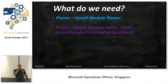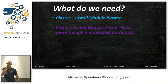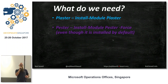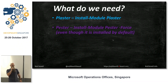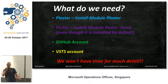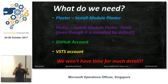What do we need? Plaster — install module Plaster. Pester — install module Pester with a force to get the latest version. We're also going to have GitHub because source control is important, and VSTS because we need to build and deploy. And all of that is free — costs you nothing, with some caveats with GitHub and VSTS.